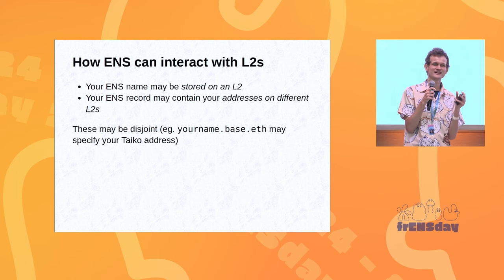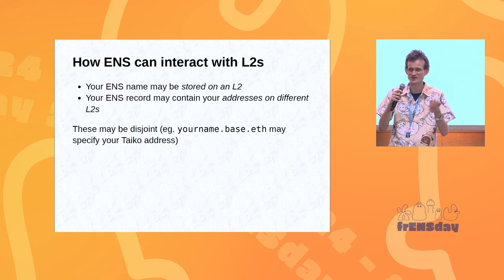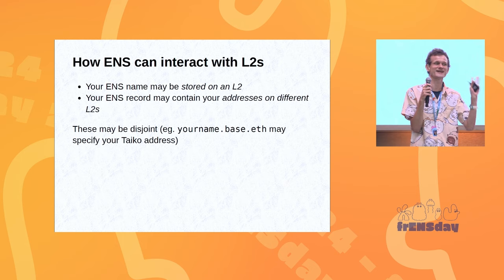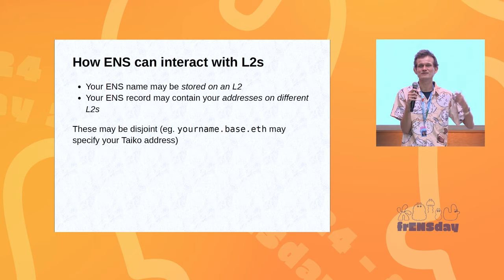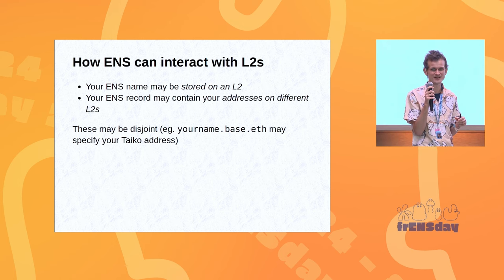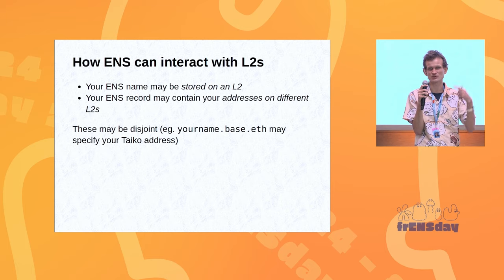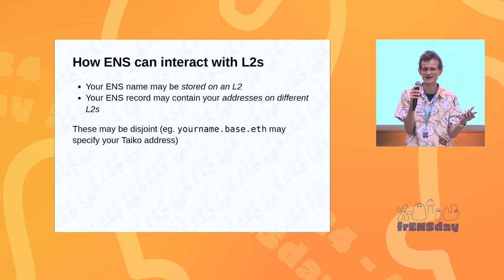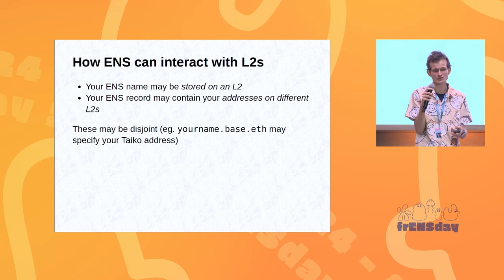Historically there are two techniques for doing this. One is ERC-3668 — I know it's also supposed to be called CCIP-READ, but CCIP-READ is not actually connected to Chainlink. So ERC-3668: the idea is that you can set up subdomains of a domain on any layer two you want. I think Optinames does this — Optinames.eth is on layer one, set up with a CCIP-READ resolver, and then you can set up a subdomain entirely on layer two. The resolution process checks L1 first, sees that L1 has an ERC-3668 contract set up, then follows instructions on that contract to accept state proofs from an L2 and use a verifier function to actually verify them.